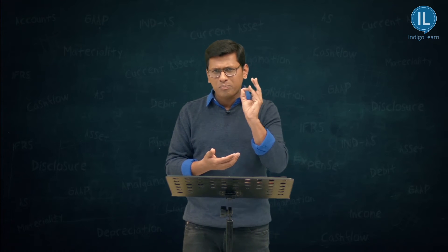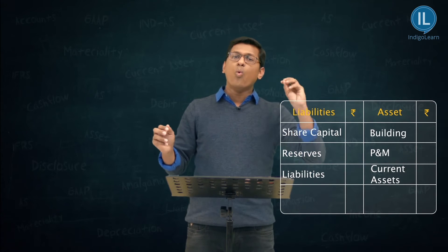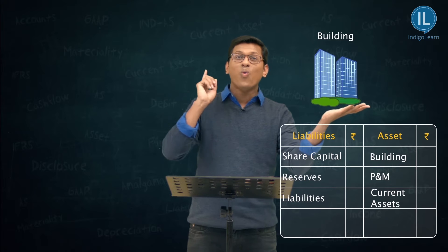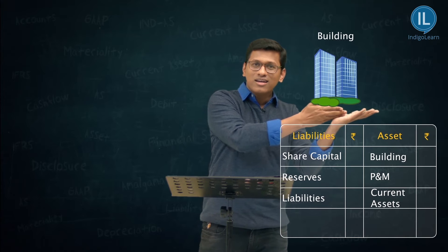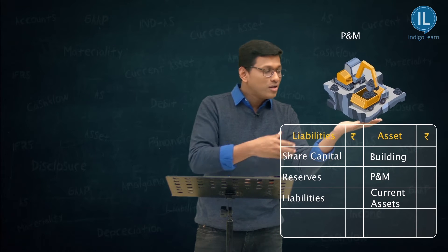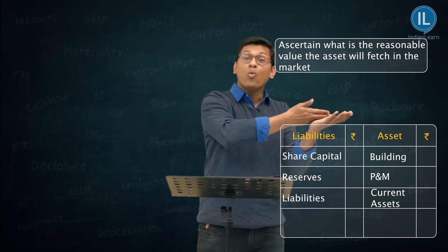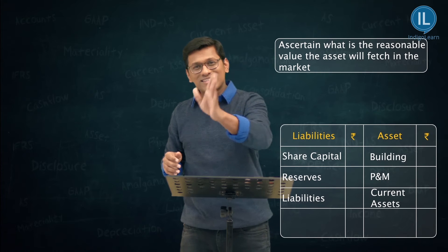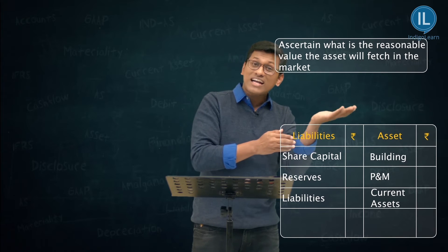Concentrate completely. There is a balance sheet with different assets — say, a building. In intrinsic valuation, you take this building and search in the market: what value can this building fetch? Or take plant and machinery — what value can it fetch in the market? You check with different people for a reasonable value: if I sell this, how much could I get? You try to ascertain a value like that.